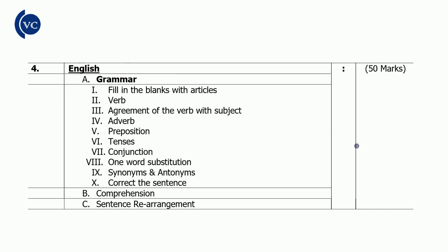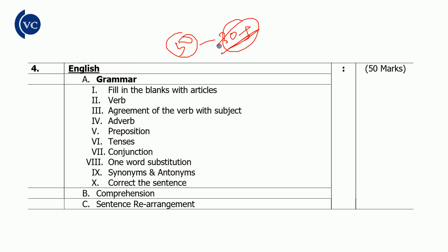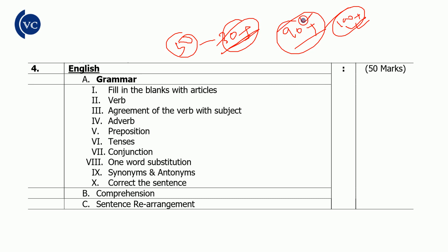English is a vital section worth 50 marks. We should aim for 30 plus score in English. If we score 30 marks in English combined with other sections, we can achieve 90 plus in total, making us fully secured for selection.